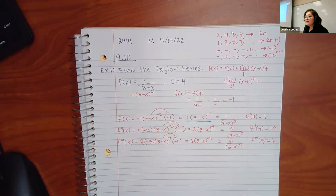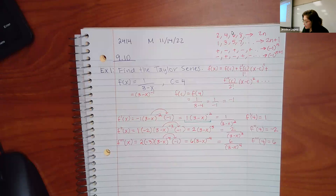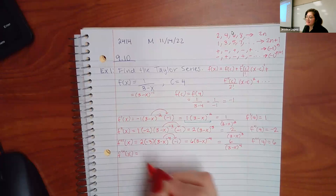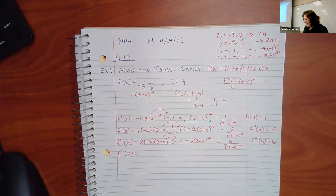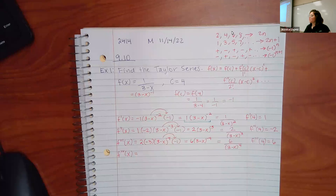Now can you tell what's going on? It's still oscillating — negative 1, positive 1, negative 2, positive 6. I'd do one more just to confirm the pattern. You really have to know your powers: 2 squared, 2 cubed, 2 to the fourth, and so on — and also know your factorials: 1 factorial, 2 factorial, 3 factorial, 4 factorial.